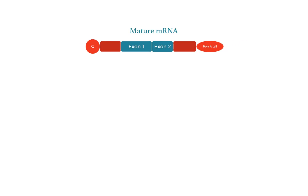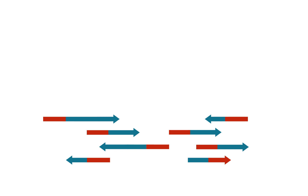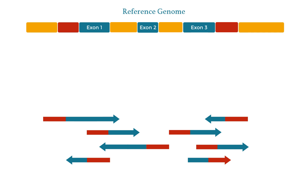The mature mRNA is then reverse transcribed to cDNA and sequenced, giving us reads that span multiple exons. Now our task is to use the sequencing reads to quantify the expression of the exons in this gene. To do this, we'll use the reference genome.